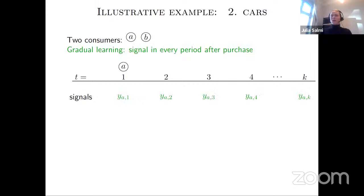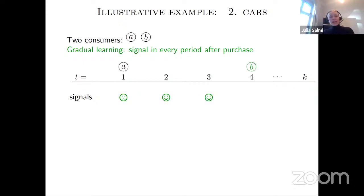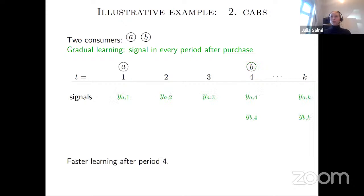This is fine for products like movies, but if we think about durable goods like a new self-driving car, when Anne purchases the car she starts using it every period, and we get a lot of observations — this is what we mean by gradual learning. There may first be a problem with the car, then it functions well, and in period four Bob is convinced enough to purchase as well. When Bob purchases, he also starts generating information, which becomes important if we add a third and fourth consumer.